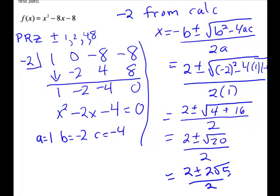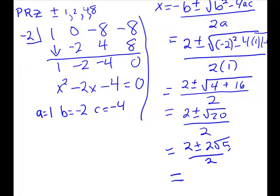We have simplified this square root of 20 a couple of times. It's 4 times 5 and 4 is a perfect square. So this will give us 2 plus or minus 2 times the square root of 5 over 2. And you have a common factor of 2 in this little triangle around your plus and minus. So all those 2's are going to divide out. This gives us 1 plus or minus square root of 5. Don't forget we also had negative 2 for our zero. So our zeros are negative 2 and 1 plus or minus square root of 5.